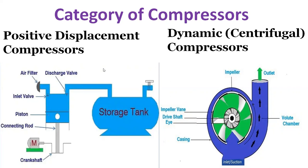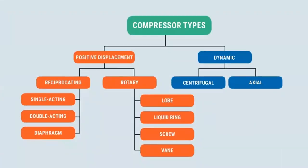Most commonly used compressors are positive displacement or reciprocating compressors. Broadly, compressor types include positive displacement and dynamic. Under dynamic, we have centrifugal and axial types. Under positive displacement, we have reciprocating and rotary. Under reciprocating: single acting, double acting, and diaphragm acting. Under rotary: lobe type, liquid ring type, screw type, and vane type.